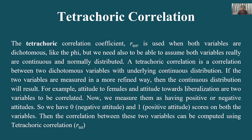तो क्या है tetrachoric correlation coefficient? R(TET) — देखिए हमने बार-बार जाना कि R क्या है। Correlation का मतलब जो formula है, उस नाम को हम R से करते हैं। TET नीचे लिख दिया तो tetrachoric के लिए हो गया। Bis लिखाता तो biserial के लिए था, p.bis लिखाता तो point biserial के लिए था।